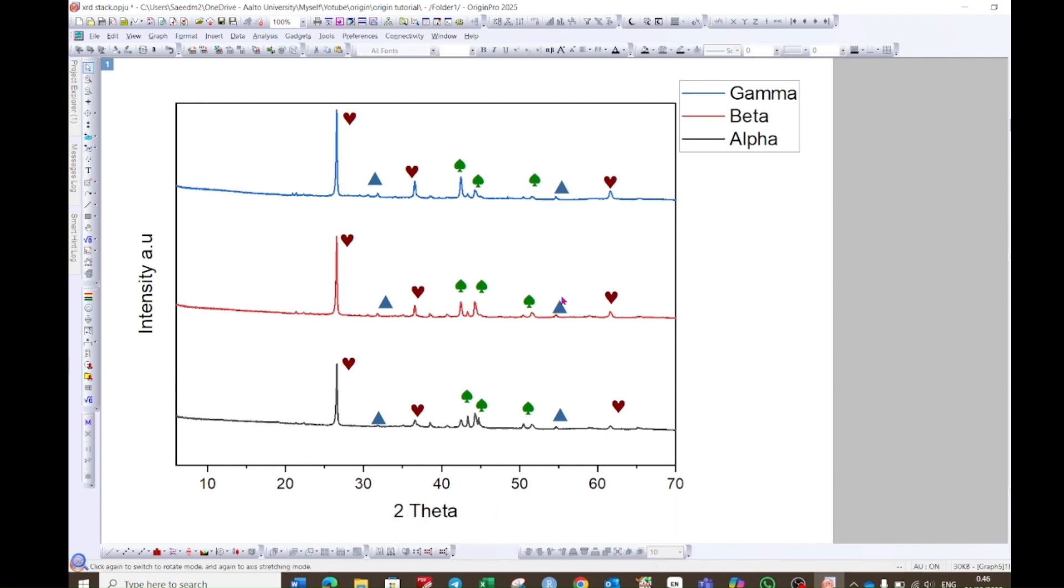When you are done identifying the peaks, then again choose these symbols. Press Ctrl+C and Ctrl+V. The symbols will be copied. Now drag these symbols to the side of the graph. Now choose this text box again. Place it right next to the symbol, and here you can write the name of the symbol. For example, here if I want to make it as a subscript to number 2, and then here you will see the subscript option. Click on it and it will be done.